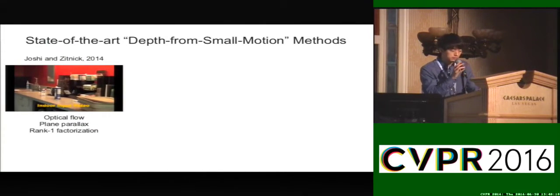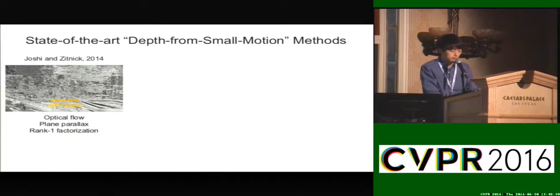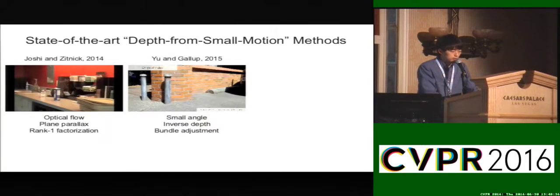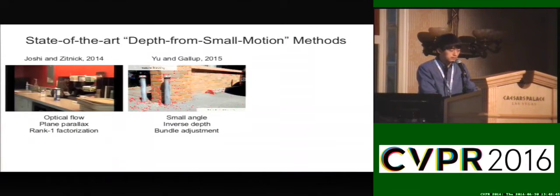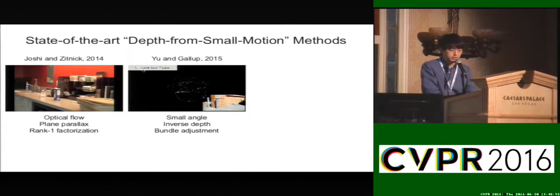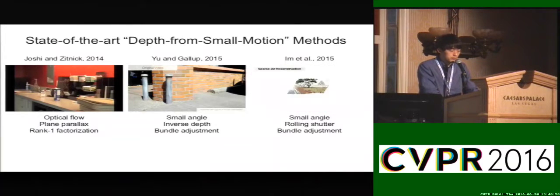Recently, there have been several depth from small motion approaches. Josh and Zinnik proposed a plane parallax scheme where images were aligned by 2D transformations, and then from the remaining disparities, relative depth information was extracted. You and Gallup brought two effective techniques: a small angle approximation for rotation and inverse depth for points. With these techniques, they showed that camera poses and scene geometry can be estimated in the bundle adjustment process. Inspired by their work, our previous approach explored a rolling shutter bundle adjustment for small motion.